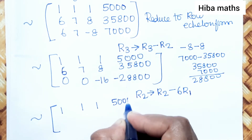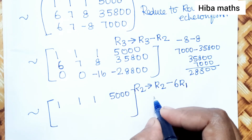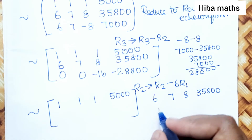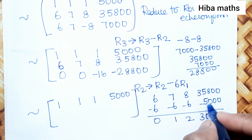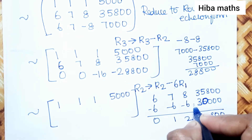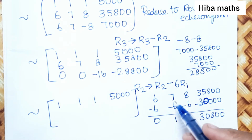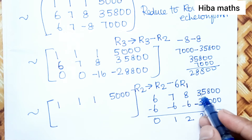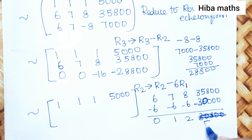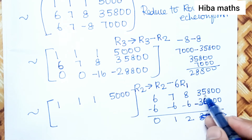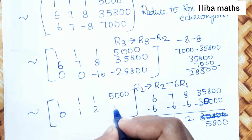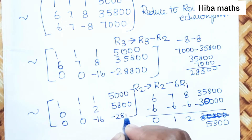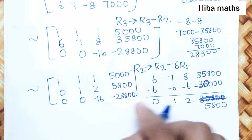Now we apply R2 → R2 minus 6 times R1. The first row stays as [1, 1, 1 | 5000]. For the new second row: 6 minus 6 equals 0, 7 minus 6 equals 1, 8 minus 6 equals 2, and 35800 minus 30000 equals 5800. So the updated matrix has second row [0, 1, 2 | 5800] and third row [0, 0, -16 | -28800].